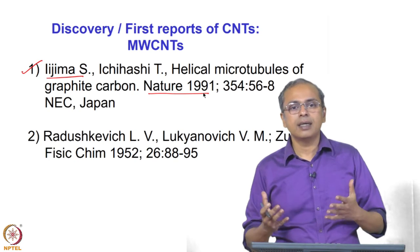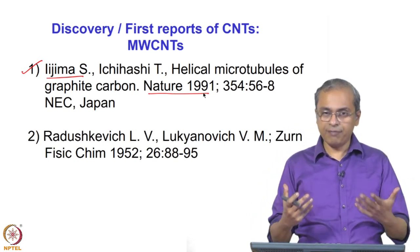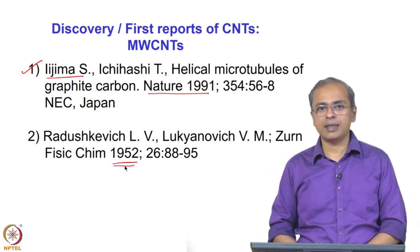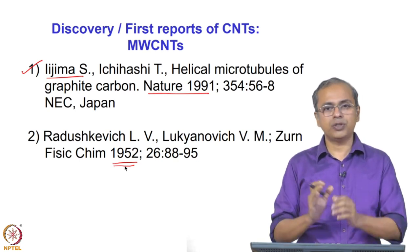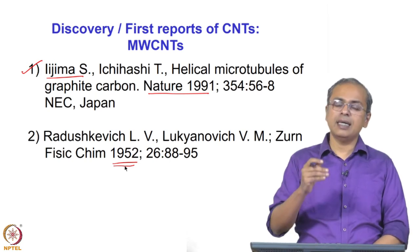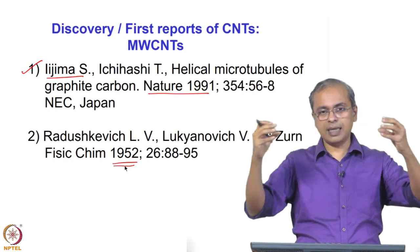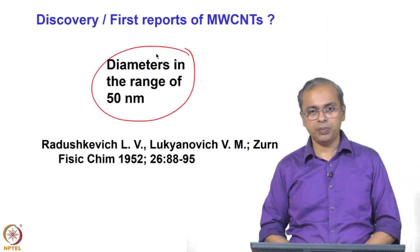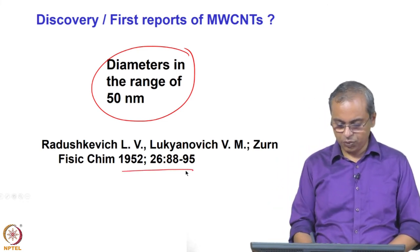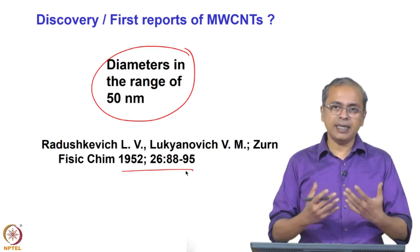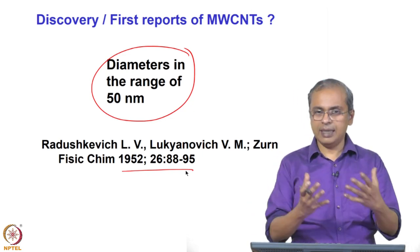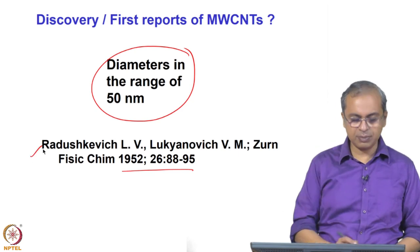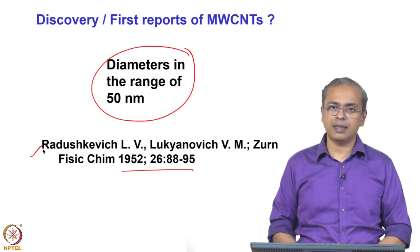With many people beginning to work in this area, they looked at older literature and found much earlier observations. In 1952, the earliest they could find, there were publications with electron micrographs showing structures that were essentially carbon nanotubes — though they were not named as such at the time. The diameters shown were in the range of 50 nanometers. Today, single-walled carbon nanotube work is still attributed to Iijima, but the attribution for multi-walled carbon nanotubes is open to debate, with some suggesting a much earlier reference.